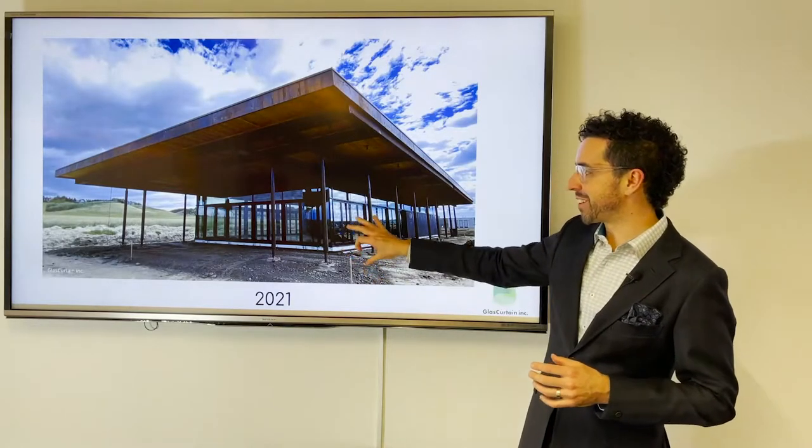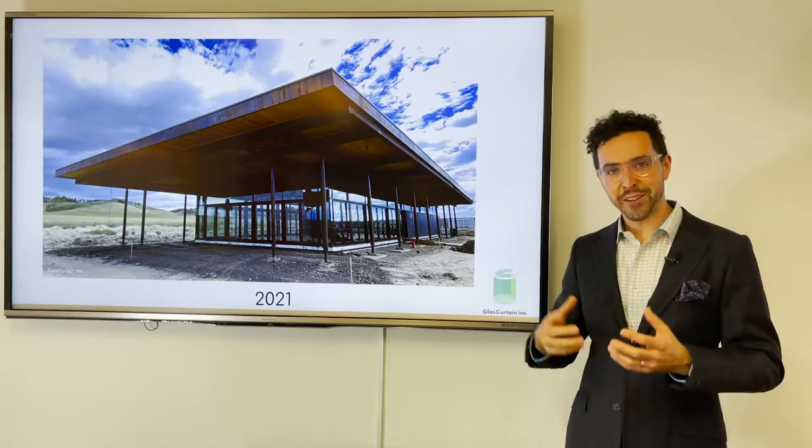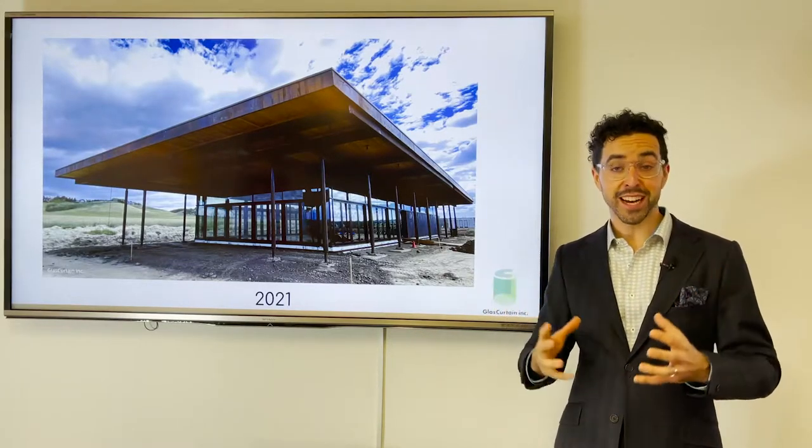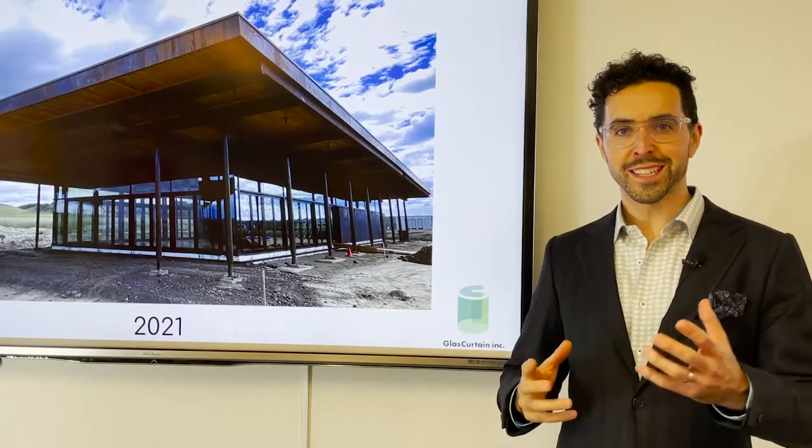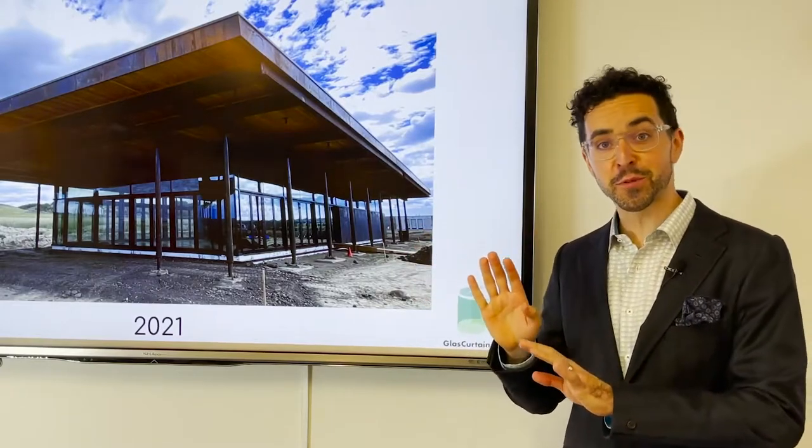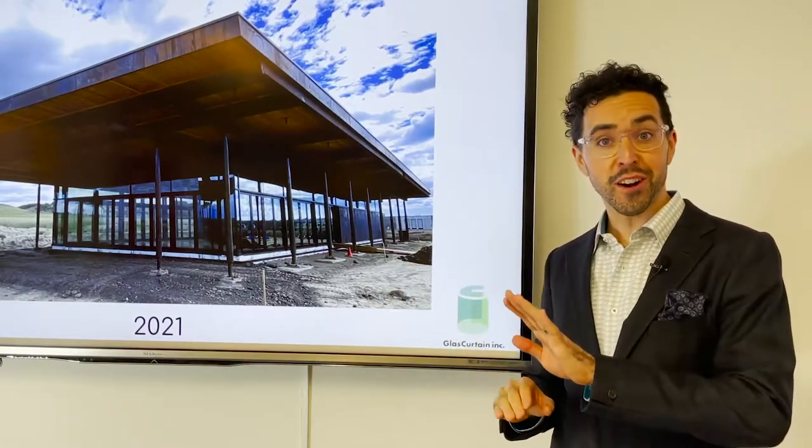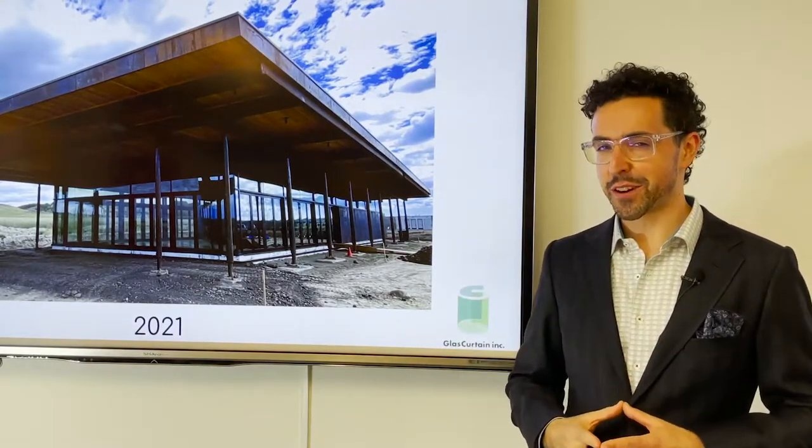But what's interesting to see is that even the very high performance aluminum systems that are integrated into these facades are often the weak link. We actually have a great showcase of the differences between the thermal bridging properties of aluminum on nano wall doors and fiberglass for the glass curtain systems. Let's take a look at some FLIR images.